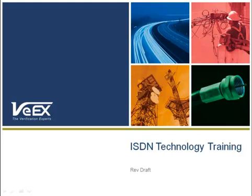Integrated Services Digital Network, or ISDN, allows the digital transmission of voice and data over copper pair. It began in the early 1990s to provide circuit-switched connections for either voice or data in increments of 64 kilobits per second. This session will provide an overview of ISDN fundamentals with an emphasis on ISDN Primary Rate Interface, or PRI.